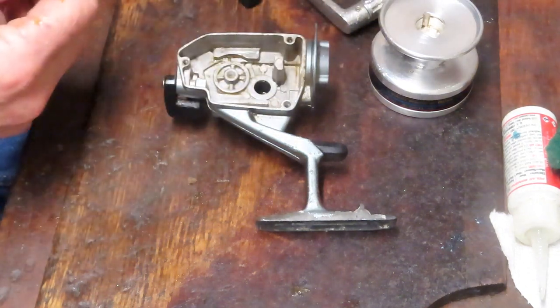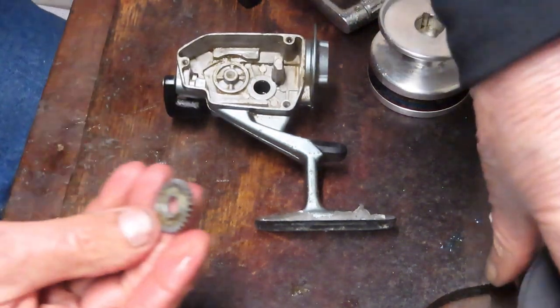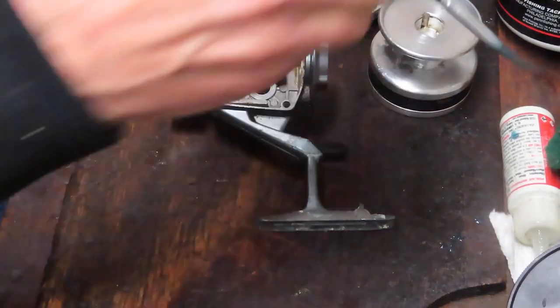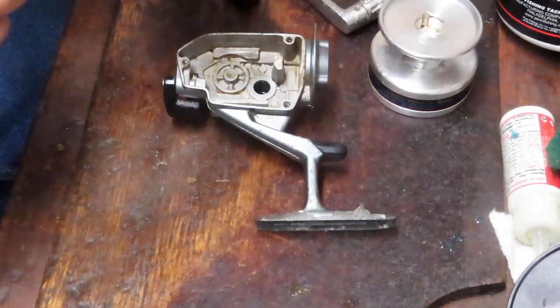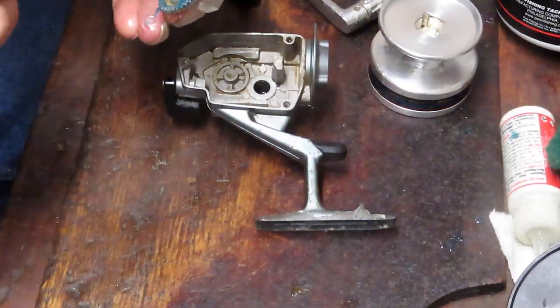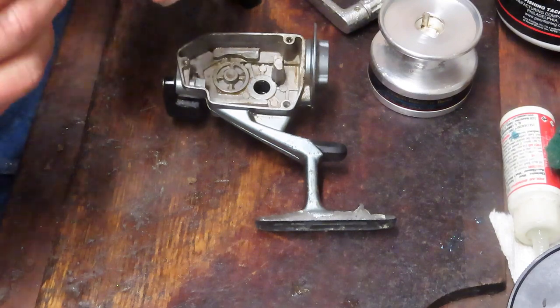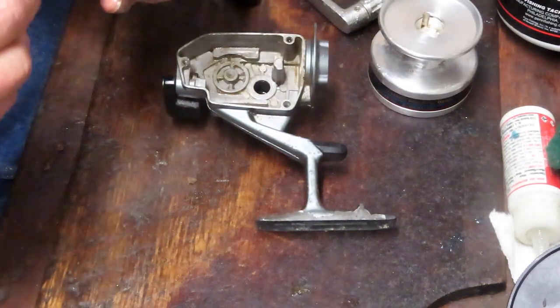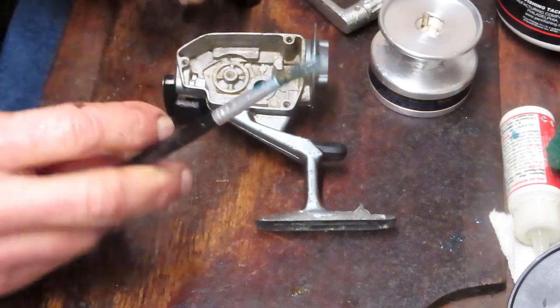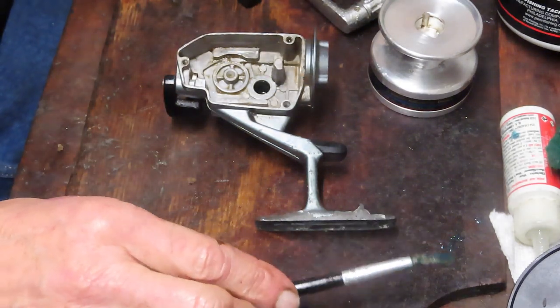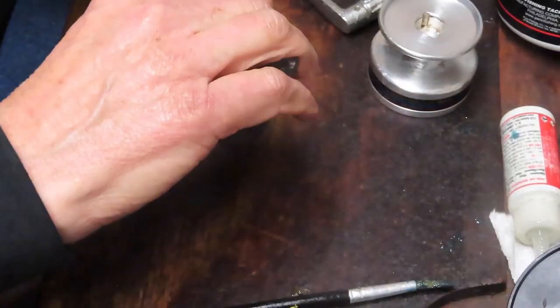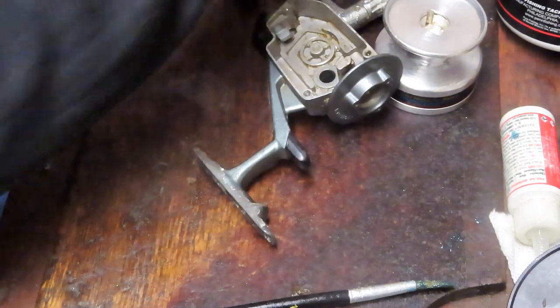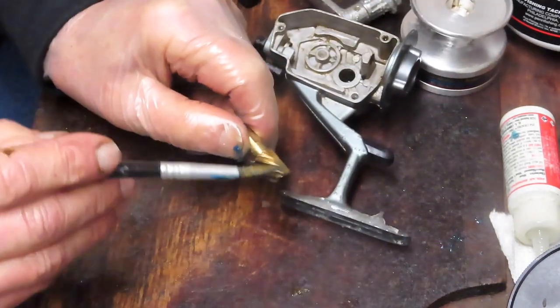Let's go ahead and rebuild the reel. You want to start by - it's a reverse process of the way we took it off. We're going to start with that crosswind block. We're going to get some fresh grease on there.